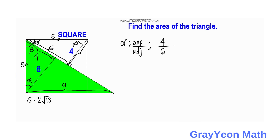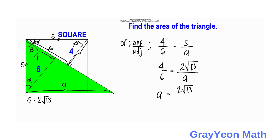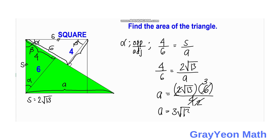From the smaller triangle, tan(alpha) = 4/6. Referring to the bigger green triangle, we have s over a, where s equals 2√13. So by cross-multiplying: a equals 2√13 times six over four. Simplifying, the two and four cancel to give three, so a equals 3√13 units.